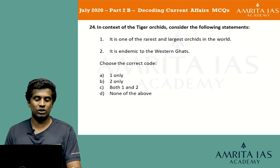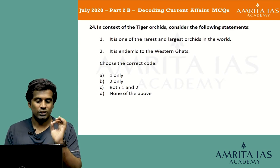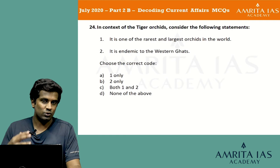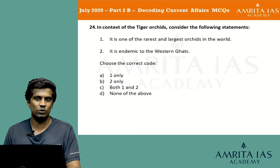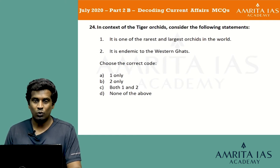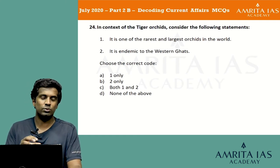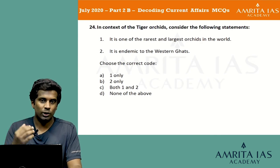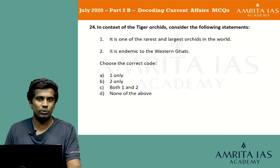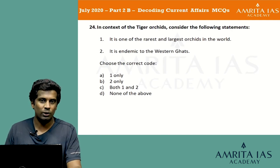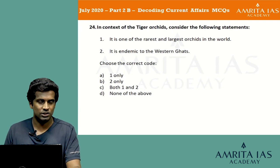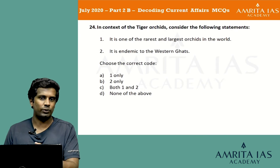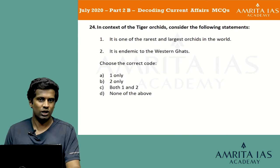The tiger orchid is one of the rarest and largest orchids in the world and was especially in the news. But the second statement — that it is endemic to the Western Ghats — is wrong, as it was not mentioned as endemic to the Western Ghats when it appeared in the news. So the answer is option A, 1 only. Even if you are not aware of all species, take this opportunity to learn about them as part of your current affairs and environment syllabus coverage.